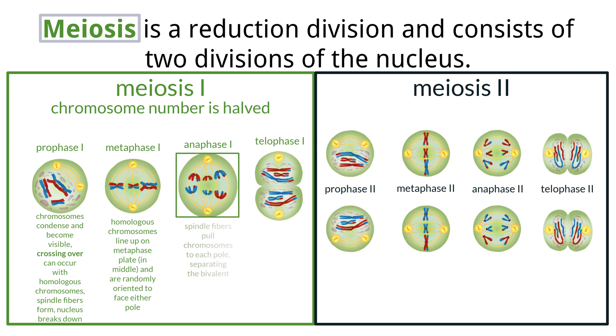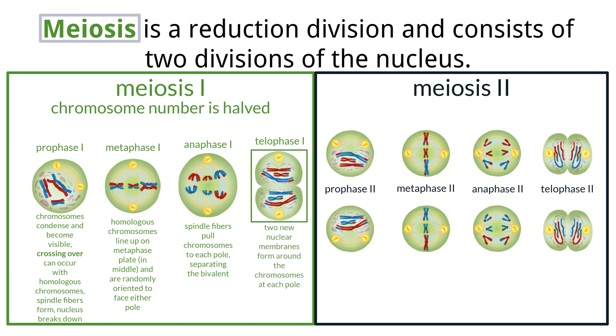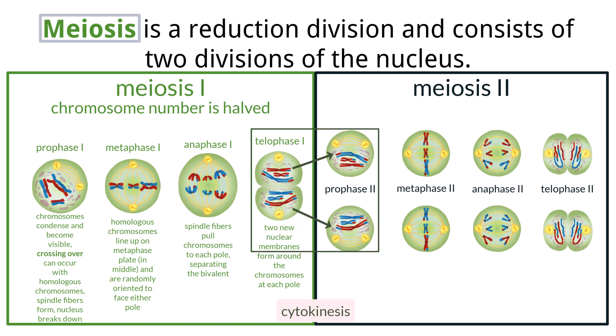During anaphase I, the spindle fibers pull the chromosomes apart to the poles. During telophase I, the spindle fibers disappear and two new nuclear membranes form. Cytokinesis occurs after telophase I. The cells are now haploid, as they only contain one chromosome of each pair, but the sister chromatids are still attached, so there is no S phase where chromosomes are duplicated.